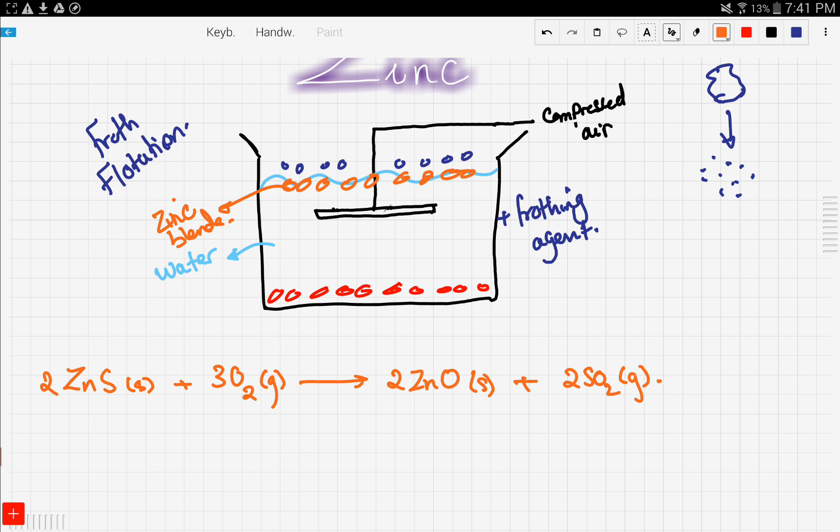Now, the thing that happens here, we take the sulfur dioxide gas and we use it to manufacture other things like, for example, sulfuric acid.